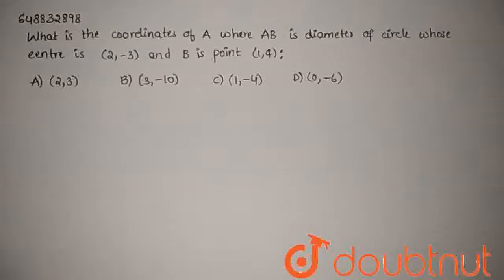What is the coordinates of A where AB is diameter of a circle whose center is 2,3 and B is 1,4?